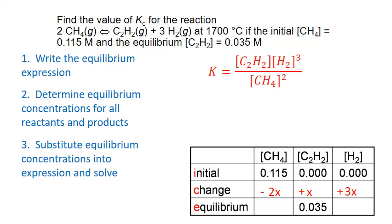We combine the initial and change rows to write formulas for equilibrium concentrations. For methane, that becomes 0.115 minus 2x. For hydrogen, it becomes 0 plus 3x, which is just 3x. For ethine it would be 0 plus x, which is just x. We know then that our x value equals that measured equilibrium concentration of 0.035.